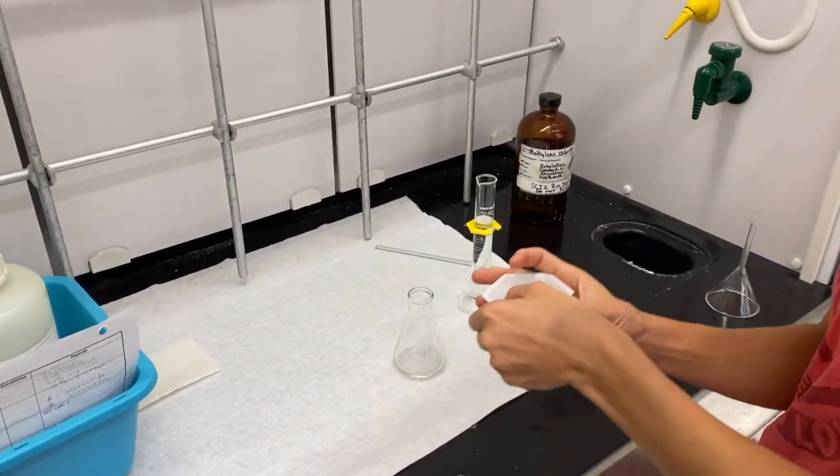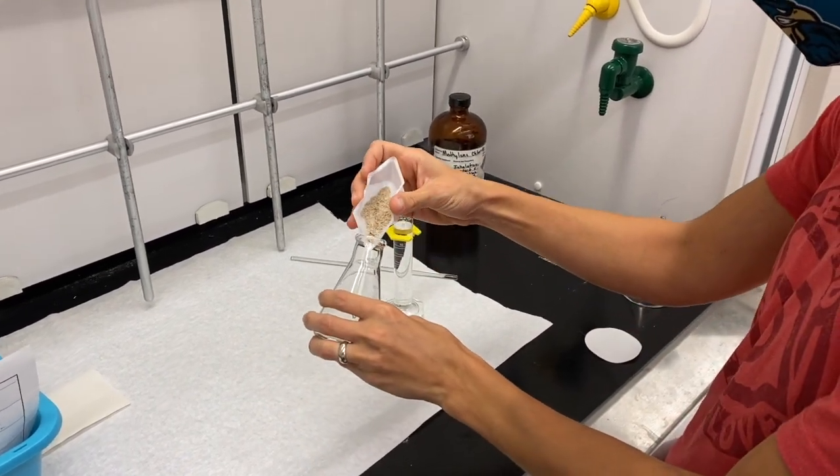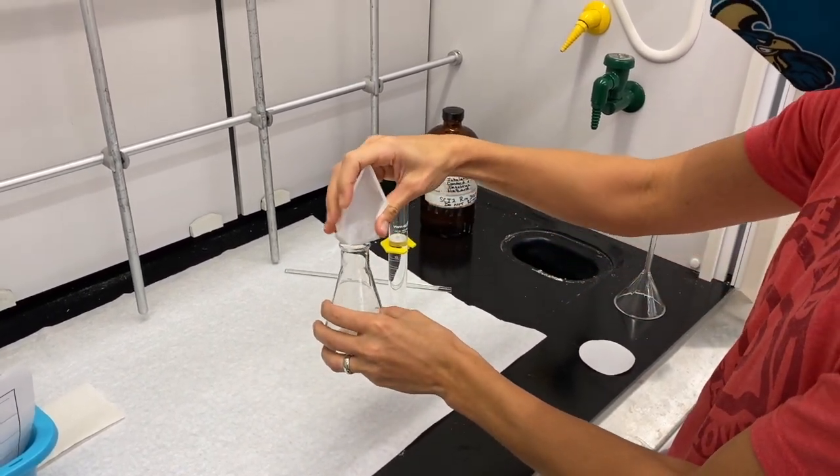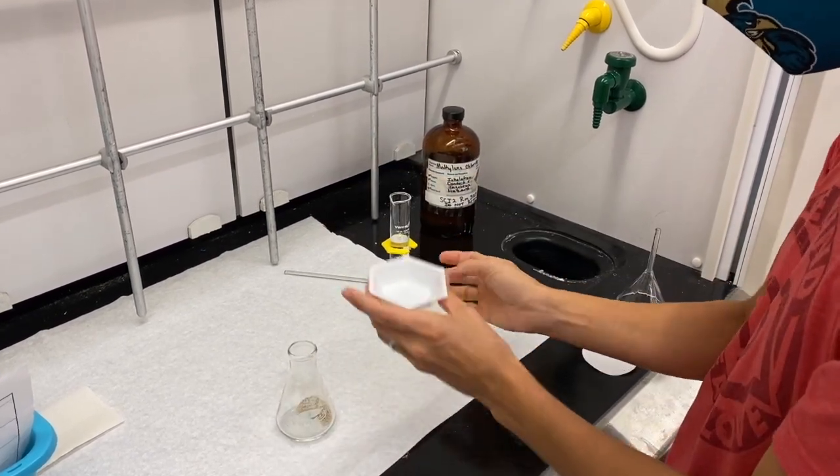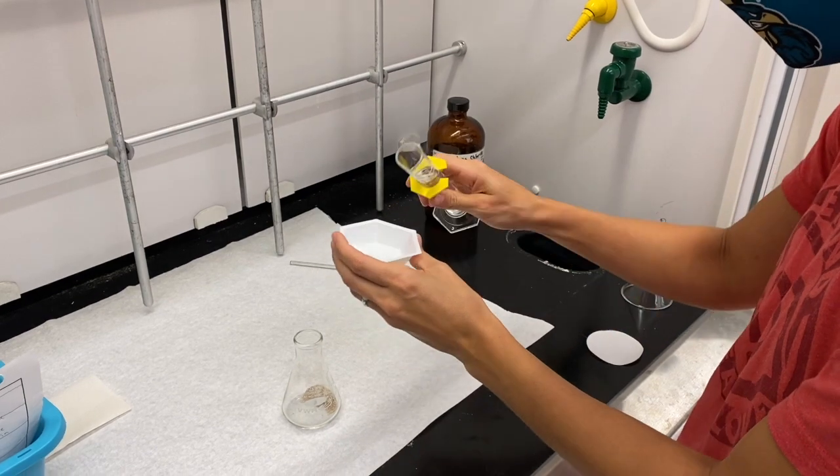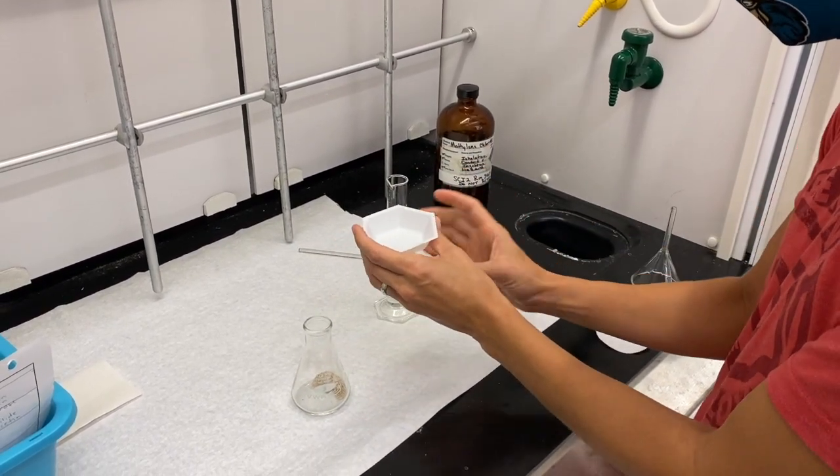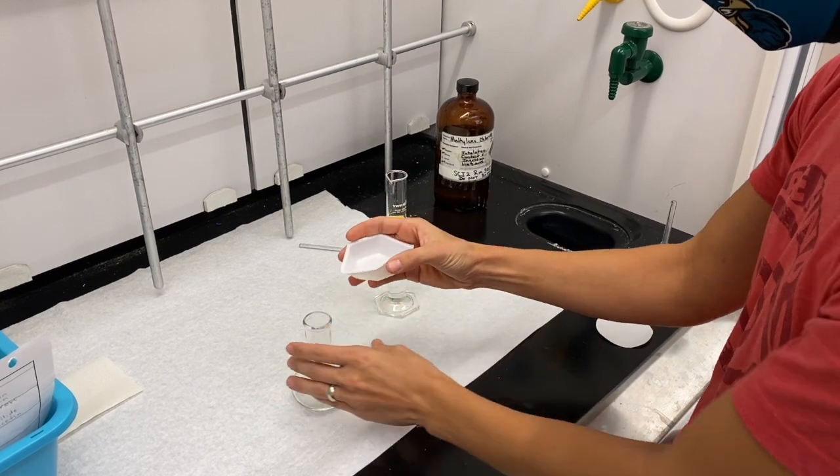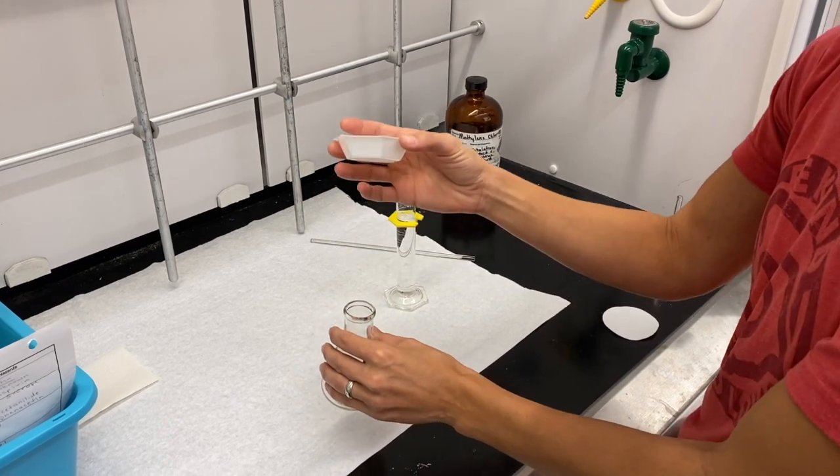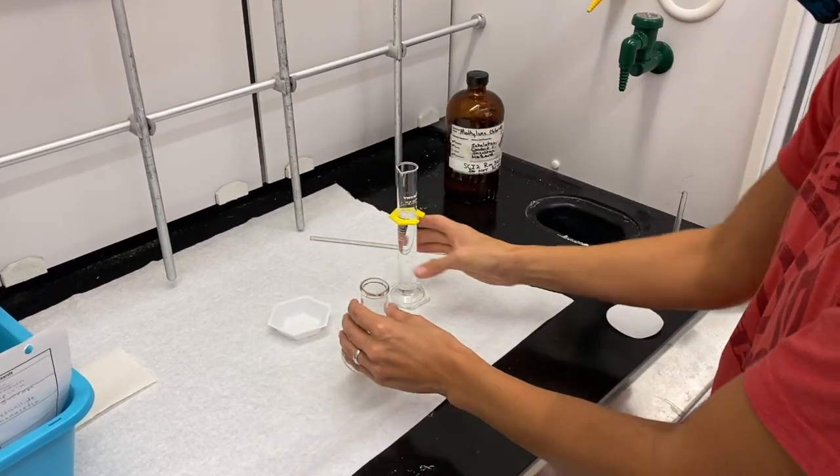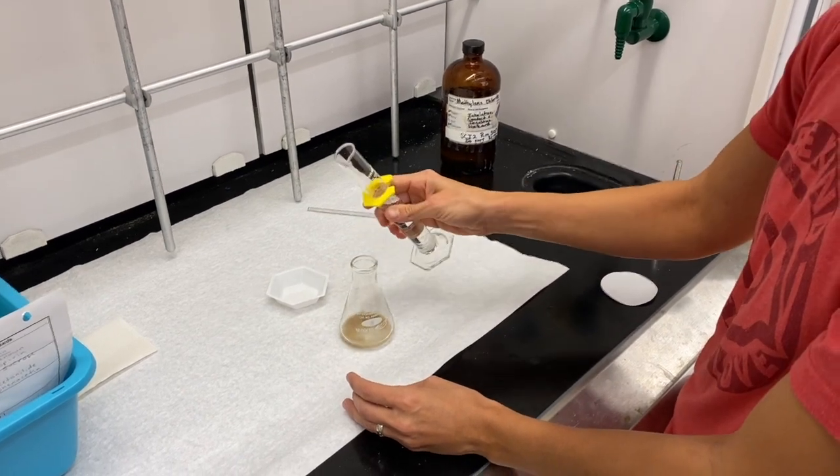So we've got Panacetin A. We're going to pour into this Erlenmeyer flask, and we don't want to lose anything. We're going to minimize some transfer loss, so I'm going to pour just a little bit of my solvent in here. The solvent is dichloromethane, which typically melts plastic, so you have to get me fast.